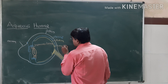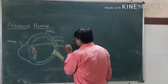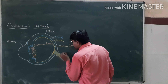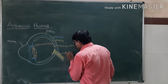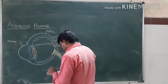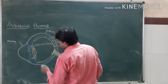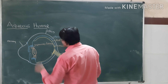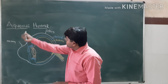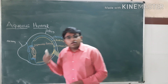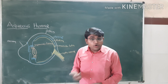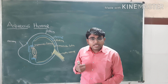Retina, macula, lunea, optic nerve. Now these are all the labeled structures. Aqueous humor — it is a clear fluid which is located in the anterior segment of the eyeball.